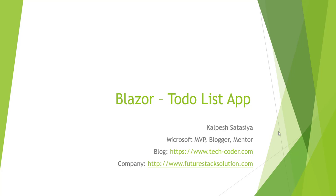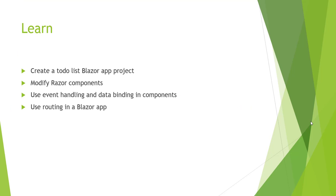Hello friends, in this video we are going to talk about a to-do list app in Blazor. What we are going to learn: we are going to create a to-do list Blazor app project, create one Razor component and modify it. In that component we will use event handling and data binding, and finally we will use routing in Blazor.